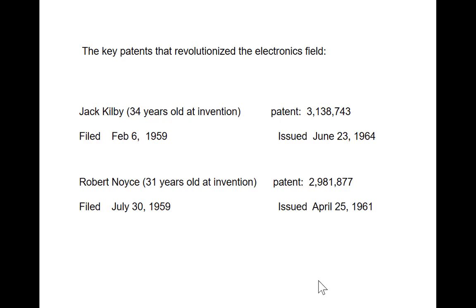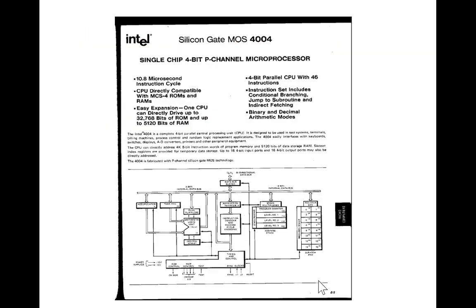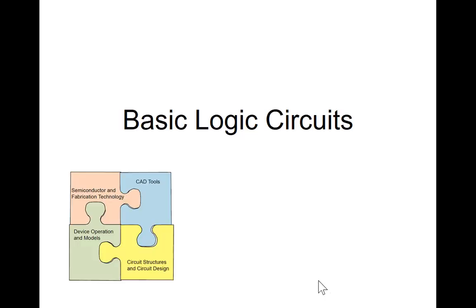Jack Kilby was 34 years old at the time it was invented. Bob Noyce was 31 at the time he did his initial IC. 1971, Intel introduces the first microprocessor. It had 2,300 transistors. Now what does a processor have? Several billion. And this is the processor that was introduced by Intel. I was going to talk about logic circuits. I guess we'll start on logic circuits on Friday. That's all for today.